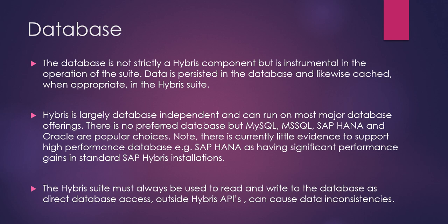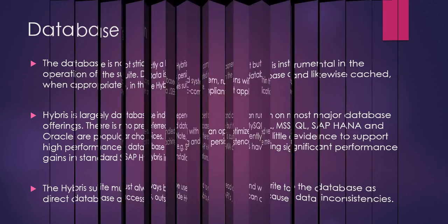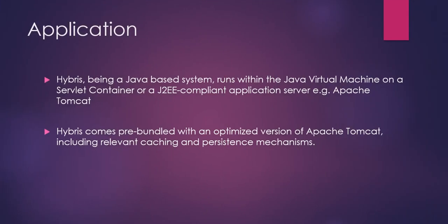The next element is the application server. Hybris, being a Java-based system, runs within the Java Virtual Machine on a serverless container or a J2EE-compliant application server such as Apache Tomcat. Hybris comes pre-bundled with an optimized version of Apache Tomcat including relevant caching and persistence mechanisms — this is the recommended way to run Hybris. However, Hybris can also be deployed on your own servers, though caution is advised as the optimized bundled version is most certainly the best one to use.